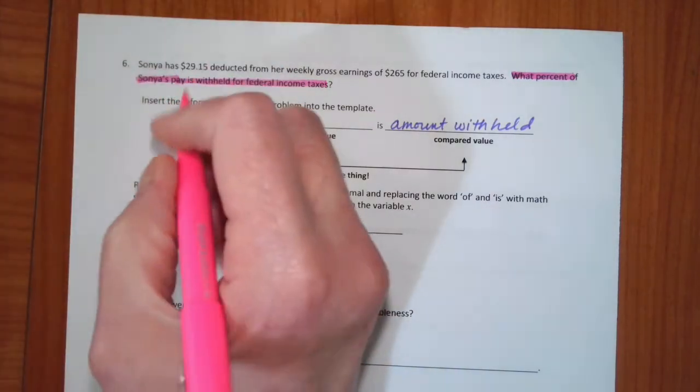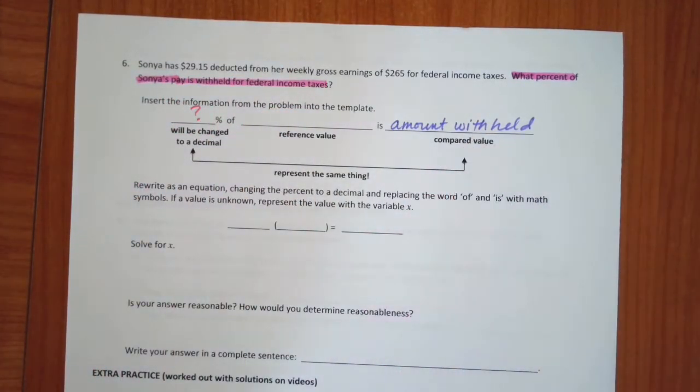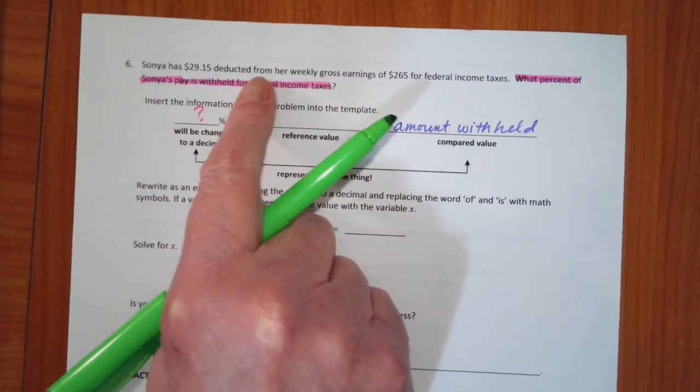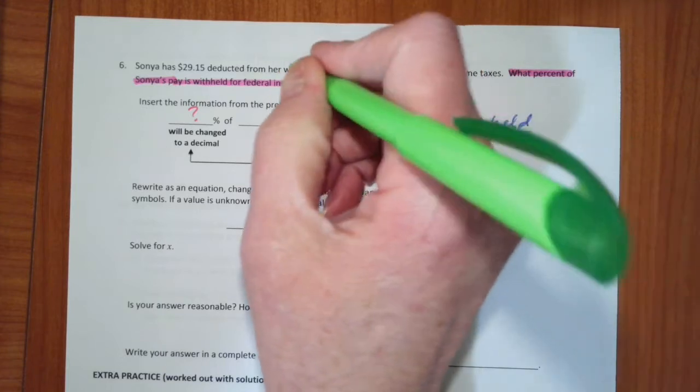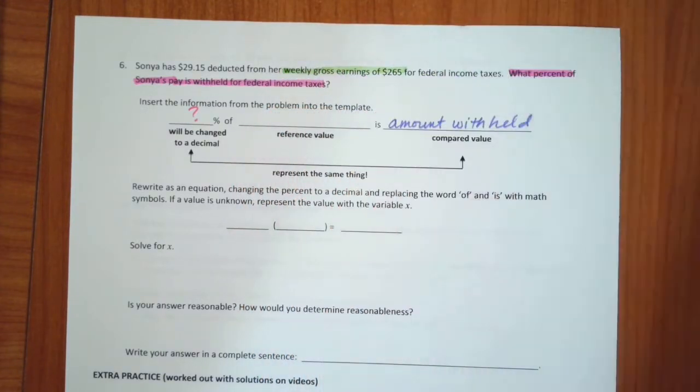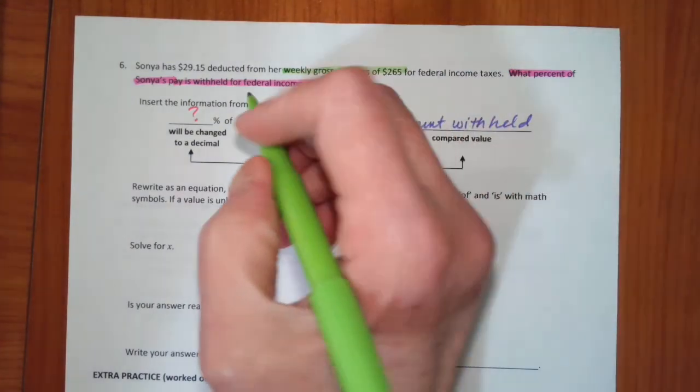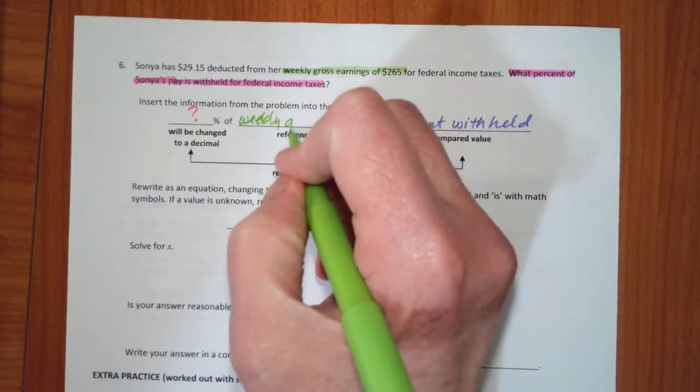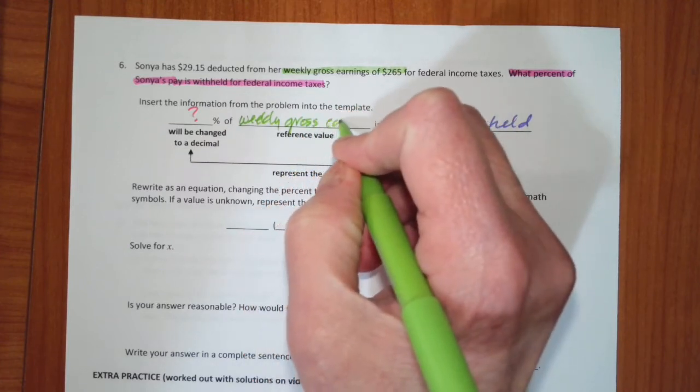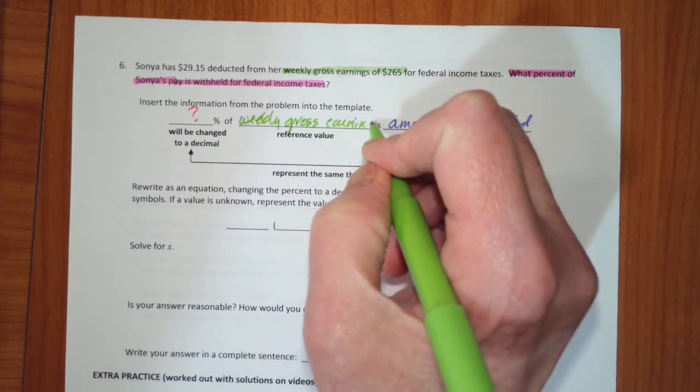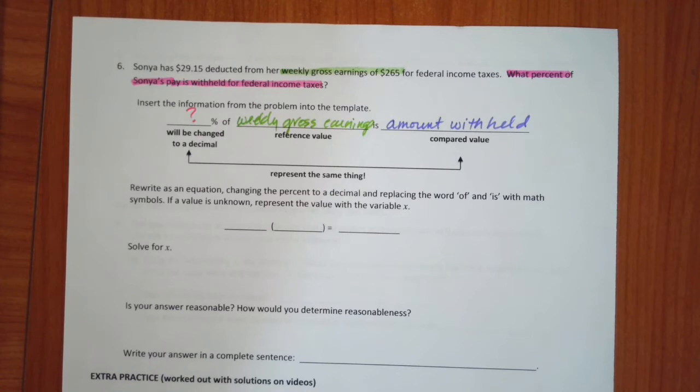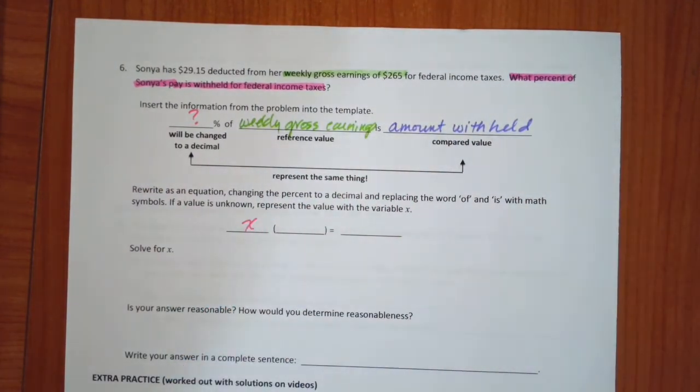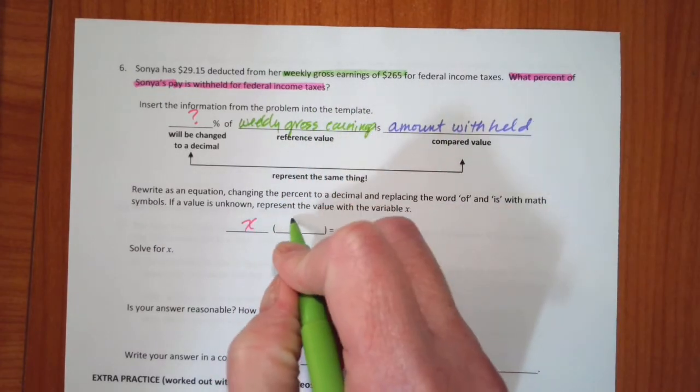This is going to be the amount withheld, and they want to know the percent. The amount deducted from her weekly gross earnings, so the only thing left is our weekly gross earnings. So what do we know? Well, we know that this is going to be our variable. We know that the weekly gross is $29.15.